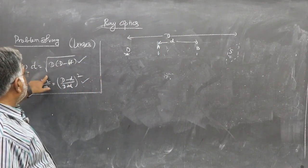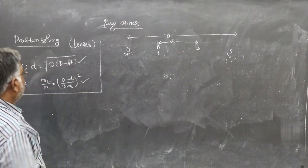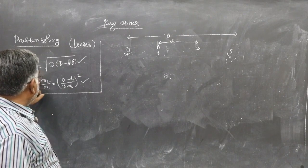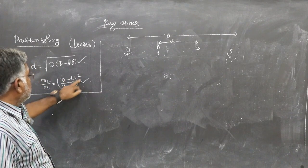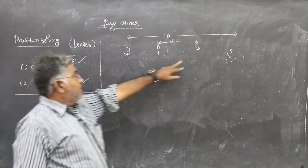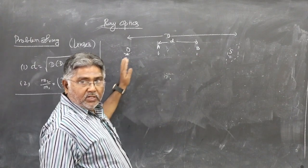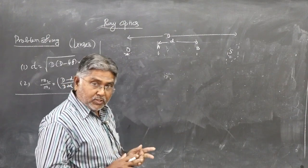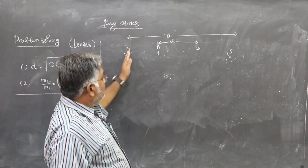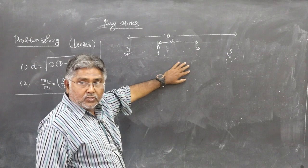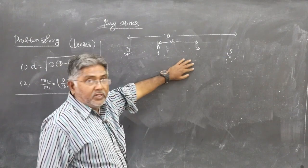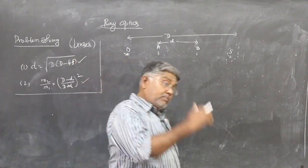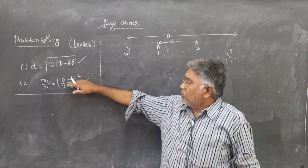You are supposed to prove that small d equals the square root of D times (D minus 4f). You are also supposed to prove that m2 by m1 equals ((D minus d) by (D plus d)) squared, where m2 is the magnification when the lens is at B and m1 is the magnification when the lens is at A. O is fixed, the screen is fixed, and the lens is moved between O and S.